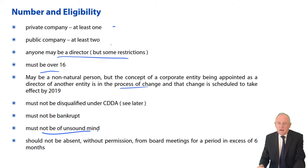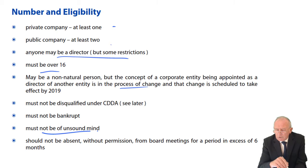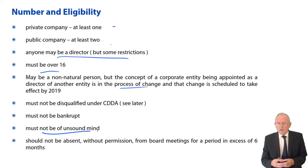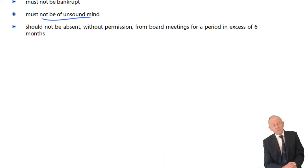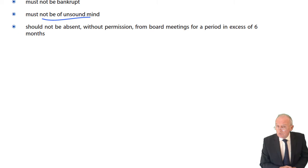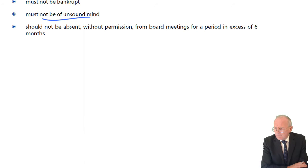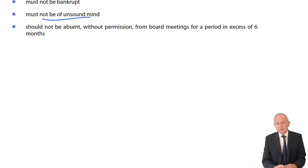A director must not be of an unsound mind. A lunatic and an idiot are different things — an idiot is a person with an IQ less than 40, so you can't appoint an idiot. A director should not be absent without permission from board meetings for a period of six months. The articles may say that any director absent without permission for more than six months shall automatically lose office — which is harsh if you're in a coma in hospital; it's a bit harsh to discover when you come out that you've lost your office as director.